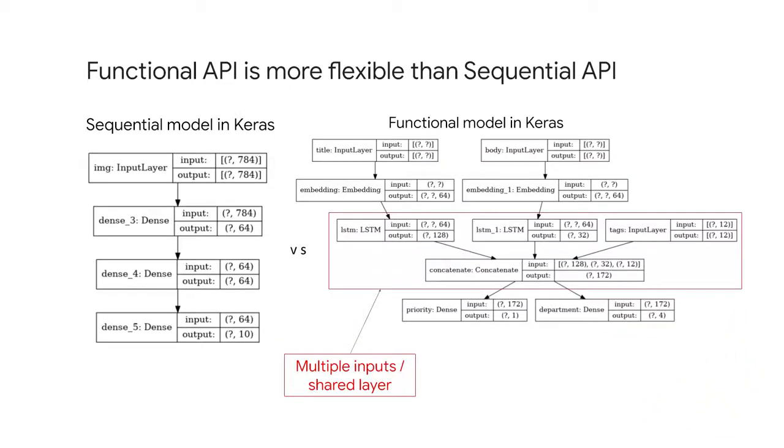The functional API is a way for you to create models that are more flexible than the sequential API. It can handle models with non-linear topology, models with shared layers, and models with multiple inputs or outputs. So consider that functional API in those use cases. The API also makes it easy to manipulate multiple inputs and outputs. And this can't be done with the sequential API.